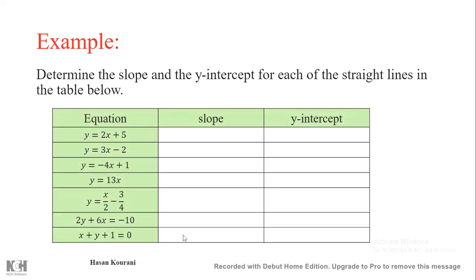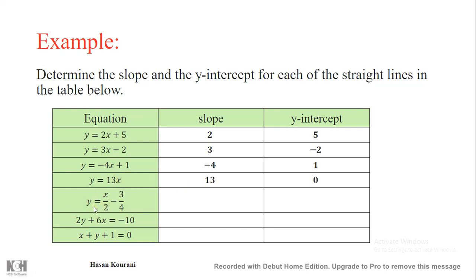Example: determine the slope and y-intercept for each straight line in the table. For y = 2x + 5, the slope is 2 and y-intercept is 5. For the next, a = 3 and b = −2. Then a = −4 and y-intercept = 1. For y = 13x, the y-intercept is 0 and slope is 13. For y = x/2 − 3/4, the coefficient of x is 1/2, so the slope is 1/2 and the y-intercept is −3/4.